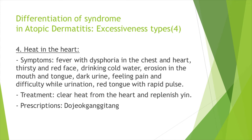Fourth, heat in the heart is another pathogen causing AD. Symptoms are fever with dysphoria in the chest and heart, erosion in the mouth and tongue, feeling pain and difficulty during urination, and red tongue with rapid pulse. Treatment is to clear heat from the heart and replenish ki. The prescription in this case is dojoganggitang.